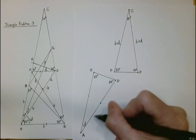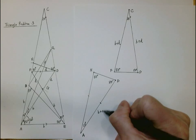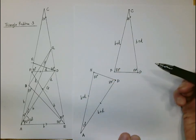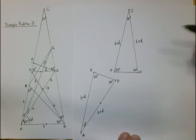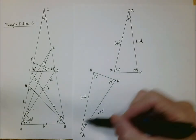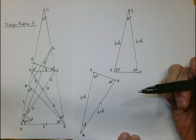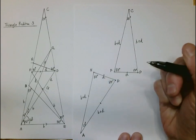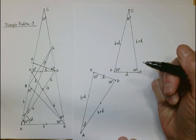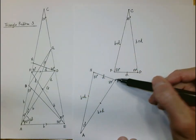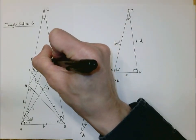We know that from A to D is b plus d, so b plus d on the other side as well. These two triangles are actually congruent by side-angle-side. The segment across from the 20-degree angles must be congruent. We know that from F to D is small d, so from H to D must be small d as well.